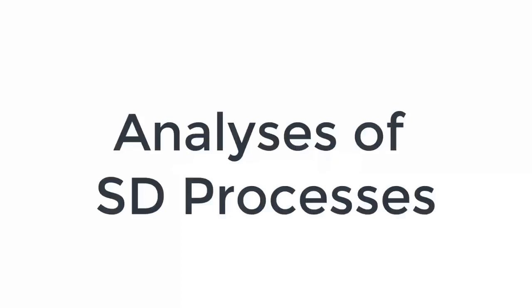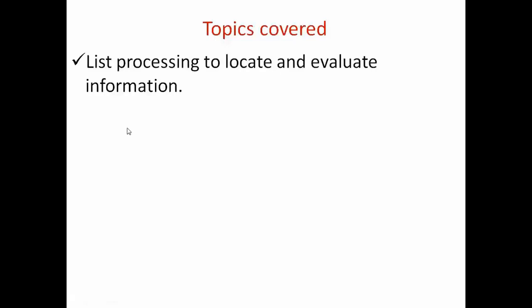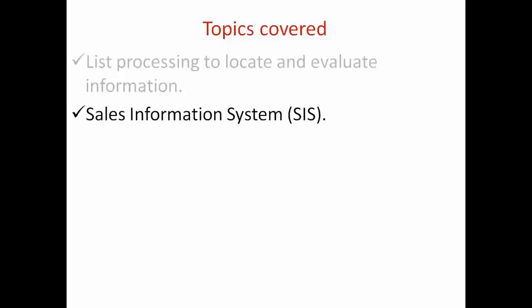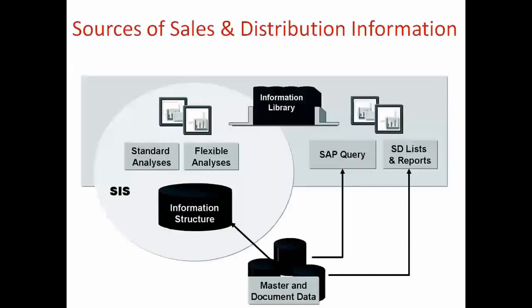Moving to our next topic: analysis of sales and distribution process. This is more of a theoretical topic. We're going to cover list processing to locate and evaluate information in SIS — the Sales Information System. Let's start with lists and reports — what are lists and what are reports.